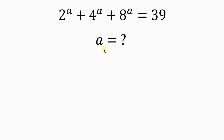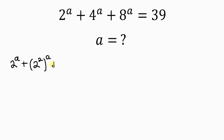Let's solve for all values of a, given that 2 to the a plus 4 to the a plus 8 to the a is equal to 39. The left-hand side can be simplified: 4 is a perfect square, which means it can be written as 2 squared, raised to the a. And 8 is a perfect cube, which means it can be written as 2 cubed, raised to the a. This is equal to 39.